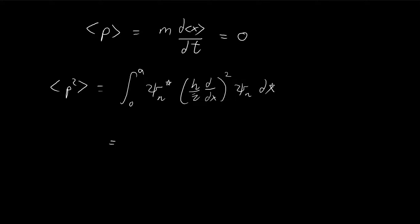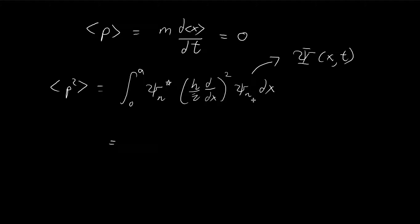We need to solve this integral. Recall that the original formula uses the complete wave function, not just the stationary state. This is just the x-component, but we can use this simplified function because the t-component is imaginary. The conjugate of the t-component cancels with the original, so all we're left with is the x-component — the nth stationary state. We don't have to deal with the complete wave function.